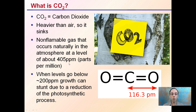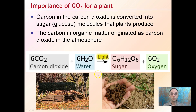However, when levels go below 200 parts per million, growth can stunt in plants as a result of the reduction in the photosynthetic process. This is why trying to maintain 405 parts per million or even greater can affect plant growth positively, but especially growth can stunt if those levels go too low.